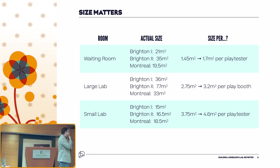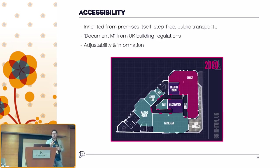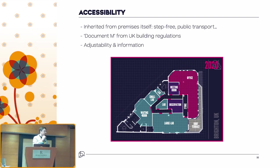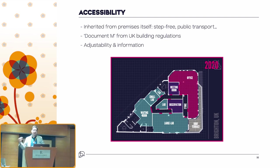The last piece on layout is a brief nod to accessibility. You should search for a document from the British government called Document M — ominously named — which documents in excruciating detail the nature of an accessible building, down to the height of light switches on the wall and the exact turning circle of a wheelchair. We're lucky in the UK to have extremely strict building regulations with accessibility in mind, all documented in Document M. Give it a Google.